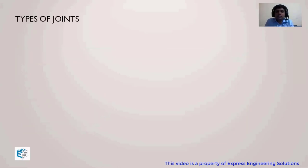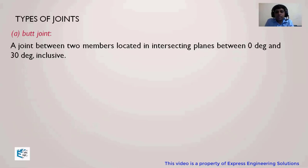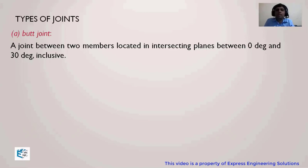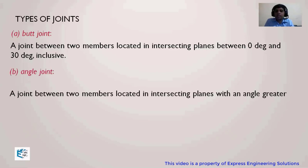Let's start with the definitions. First is the butt joint. A butt joint is defined as a joint between two members located in intersecting planes with an angle between 0 degrees and 30 degrees — where both members are abutting one another. If the angle is 0 to 30 degrees, it is defined as a butt joint.